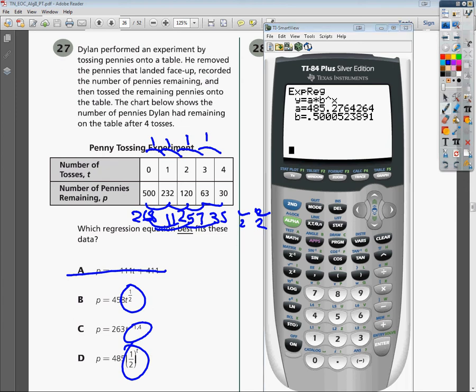and it's going to tell me that in the form it's supposed to be, it has y equals, a being some number, and this number they say is 485-ish.